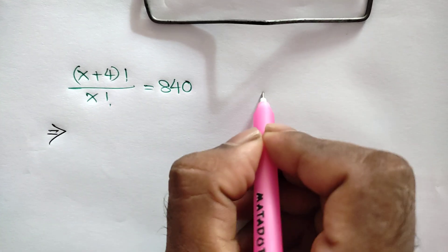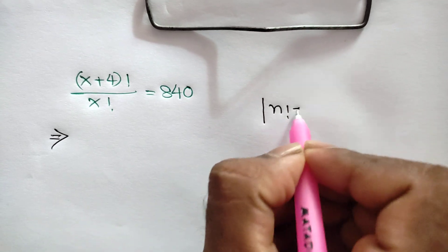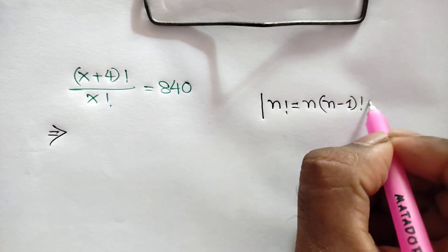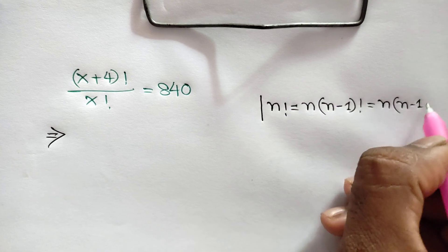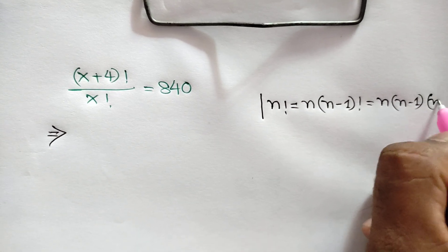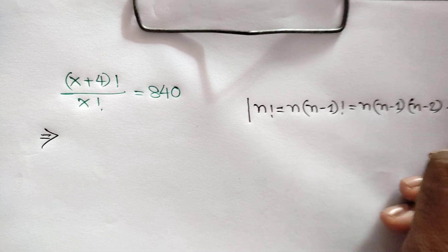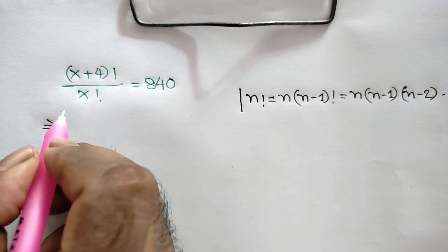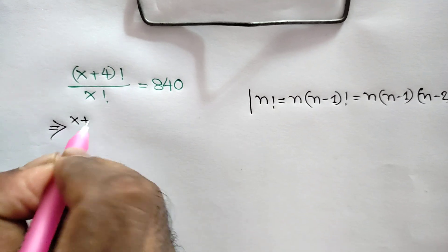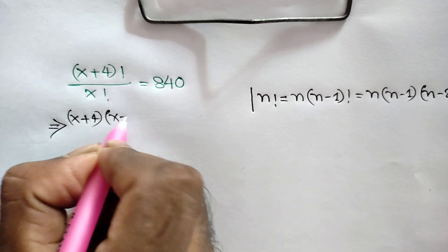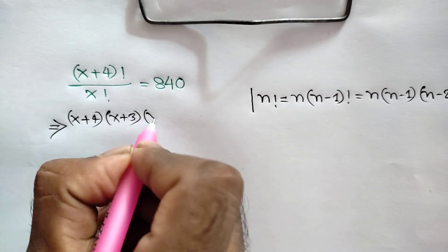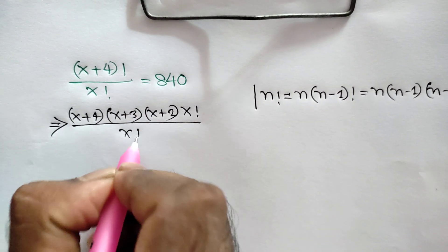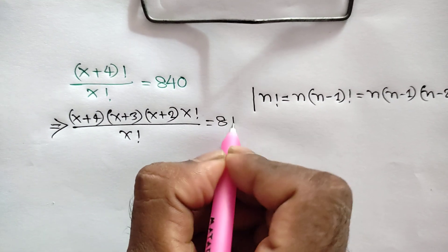We know n! is equal to n times (n-1)! which is equal to n times (n-1) times (n-2)!. So we can write here (x+4) times (x+3) times (x+2) times x! over x! is equal to 840.